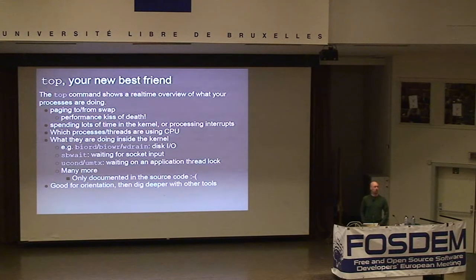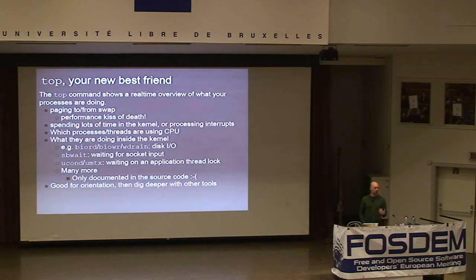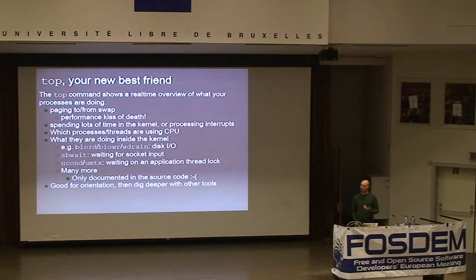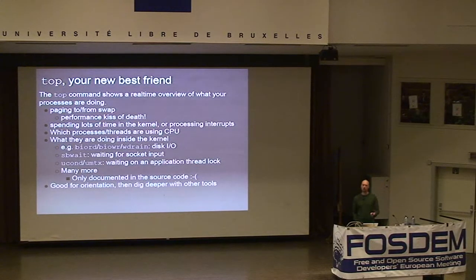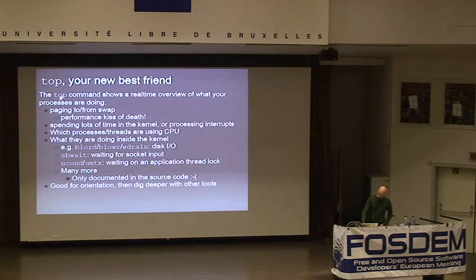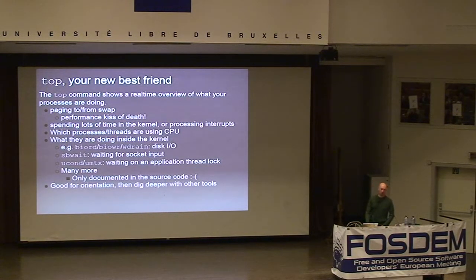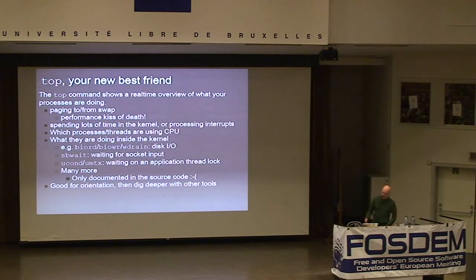Top shows you if the system is spending a lot of time in the kernel or processing interrupts, and then it breaks it down by thread so you can see which processes and threads are using CPU. It also shows you for processes running inside the kernel what they're doing or where they're blocked waiting for a resource. Unfortunately it involves cryptic abbreviations, and there's no good reference I know of for FreeBSD that breaks down what the common wait channels are and explains what they mean.